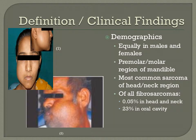Here are pictures of both a male and female showing the typical growing mass of fibrosarcoma. Clinically, fibrosarcomas are found equally in both males and females. They may occur within bone or soft tissue, with most cases of the jaw occurring in the premolar-molar region of the mandible. Of all sarcomas in the head and neck region, fibrosarcoma is the most common. However, of all regions that fibrosarcoma can occur in the human body, only 0.05% occur in the head and neck, and of those cases, 23% are within the oral cavity.